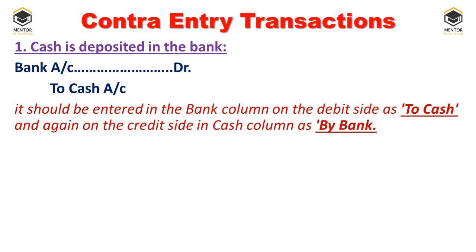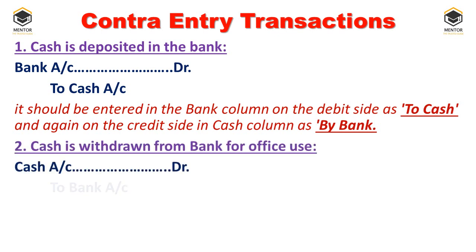In the cash book for depositing cash into bank: on the debit side, write 'to cash' in the bank column since bank balance increases; on the credit side, write 'by bank' in the cash column since cash balance decreases. The second contra entry transaction is cash withdrawn from bank for office use only. If it is for personal use, it is not a contra entry. The journal entry is: cash account debit to bank. When cash is withdrawn for office use, bank balance decreases and cash balance increases.